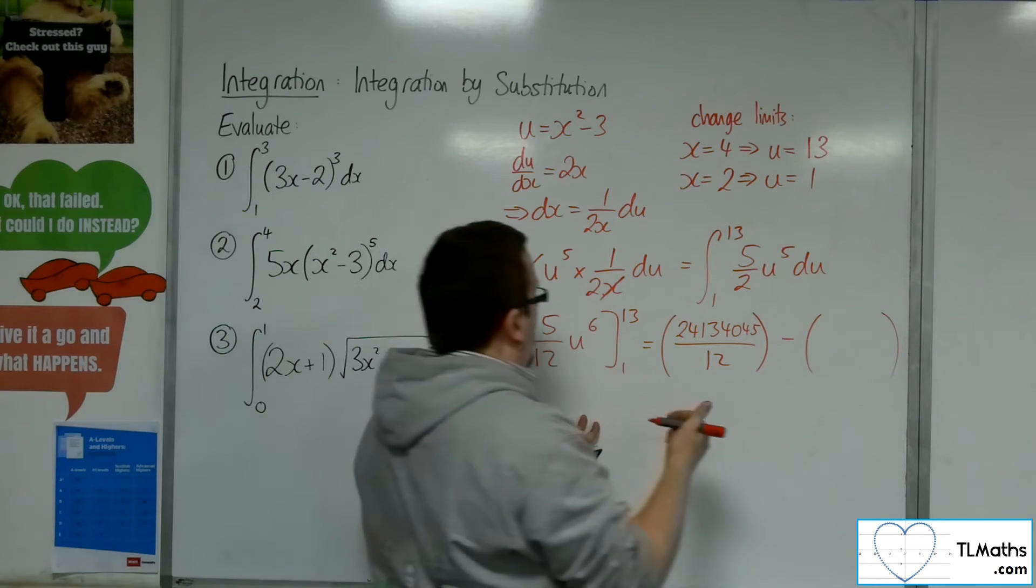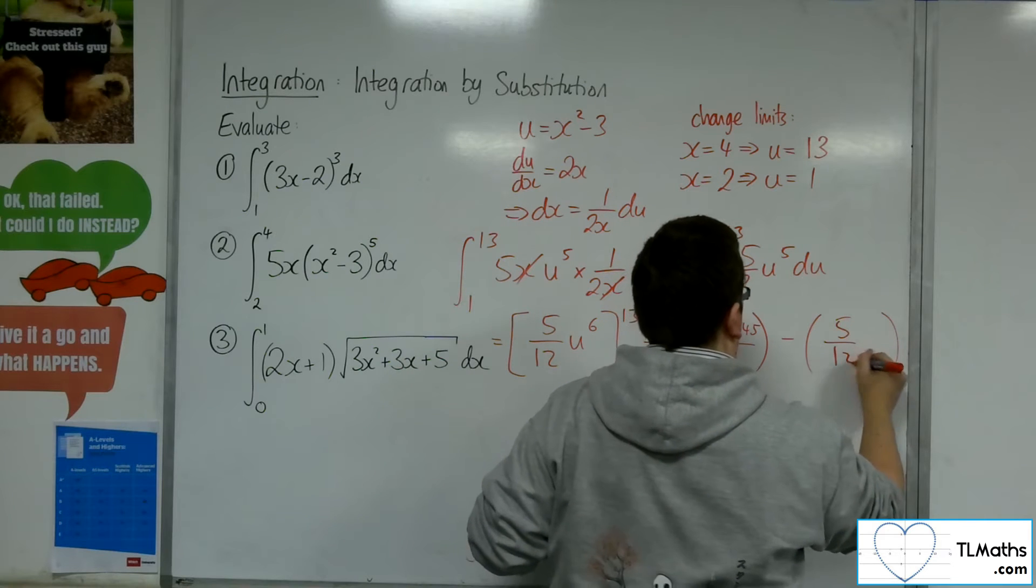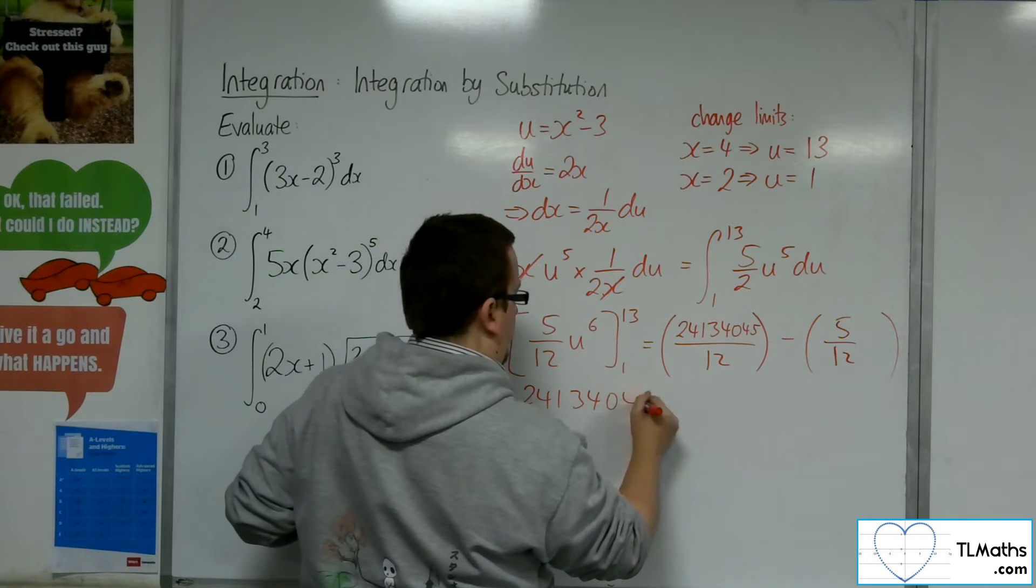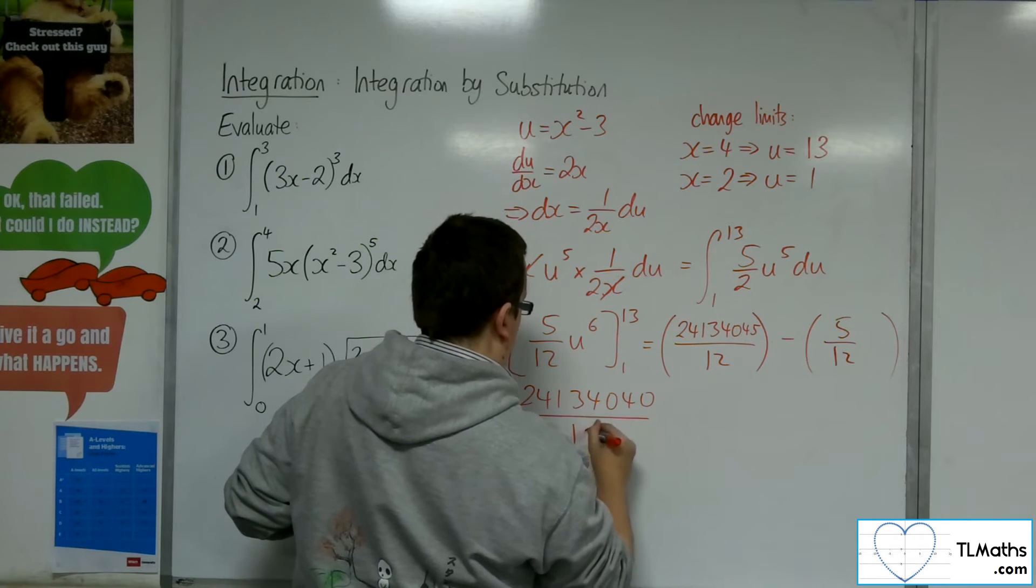So it looks like I'm ending up with 2,413,404 over 12.